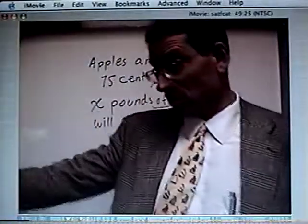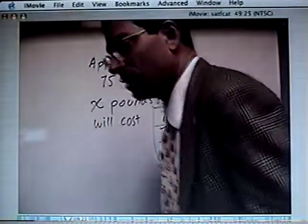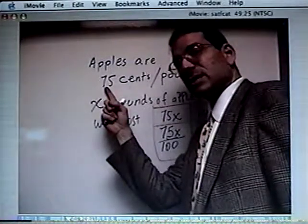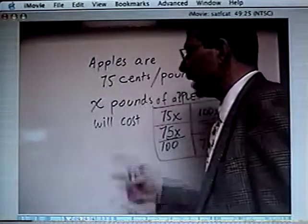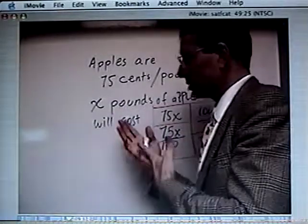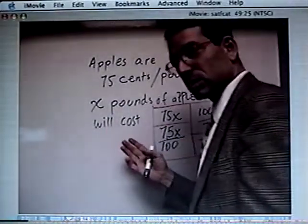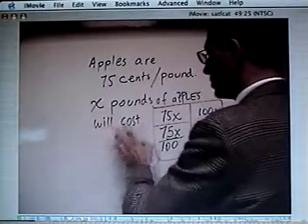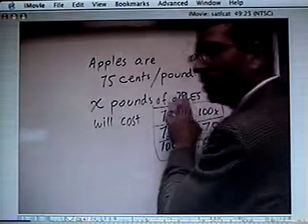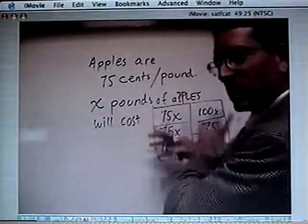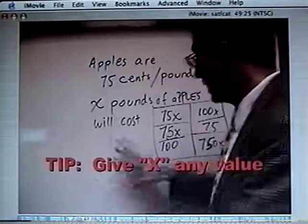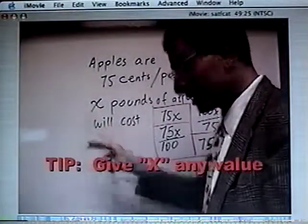But we're not going to worry about the X. We're going to think, let's substitute something. Now, let's say that apples are 75 cents a pound. They want to know, how much will X pounds of apples cost? X pounds of apples will cost 75X, or 75X over 100, or 100X over 75. It's all very confusing. But what if we just say, put a number in for X.